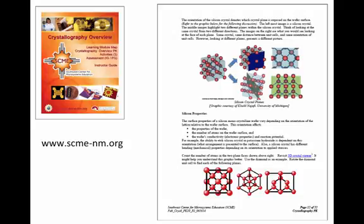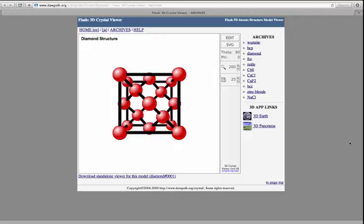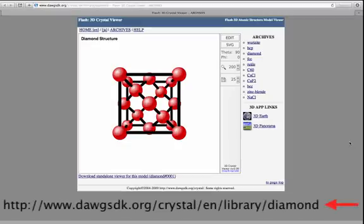There are a couple of ways that you can access the 3D Viewer. If you have the Crystallography Overview PDF file, you can find a link at the bottom of this page. Or, you can simply copy this URL shown here into your web browser to access the 3D Viewer.